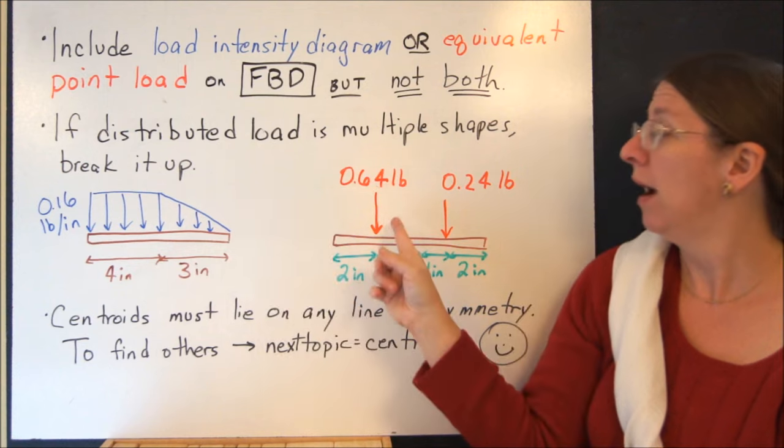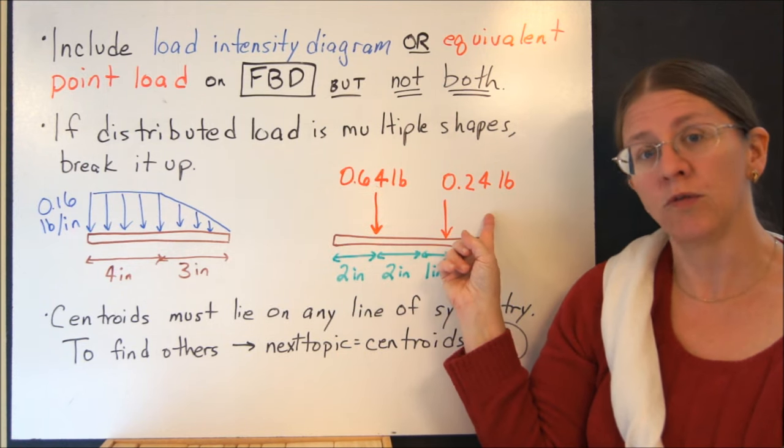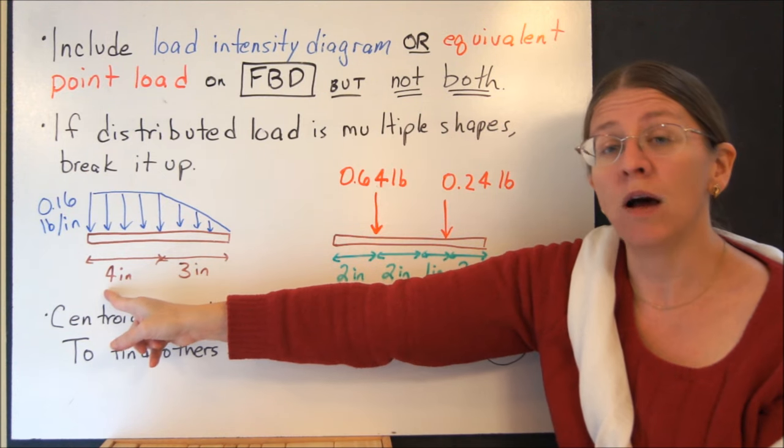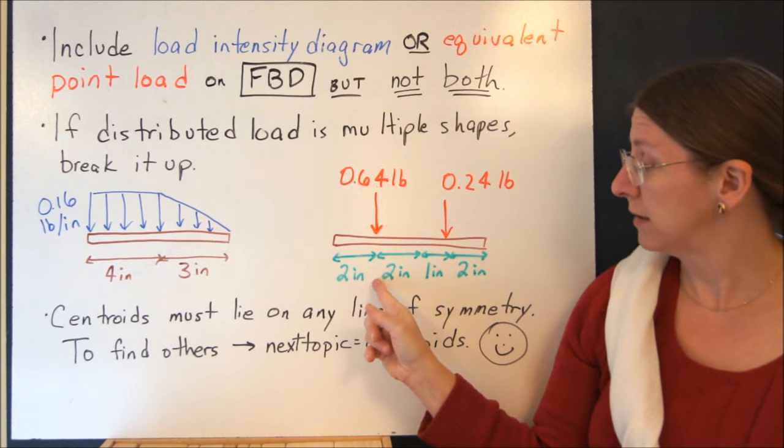Like any other force, if you want to take so much over here and so much over here, I can certainly break up a distributed load too. So if I have a rectangle and a triangle, I can find the equivalent point load for the rectangle, and the equivalent point load for the triangle, and put them where they would act.